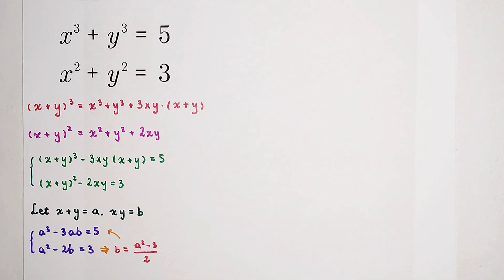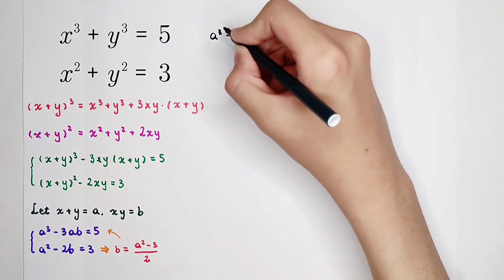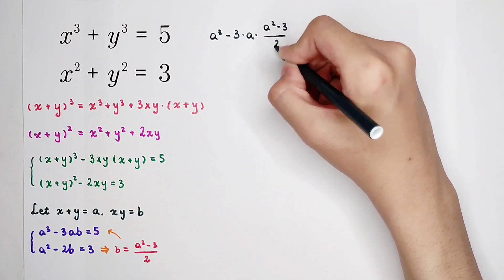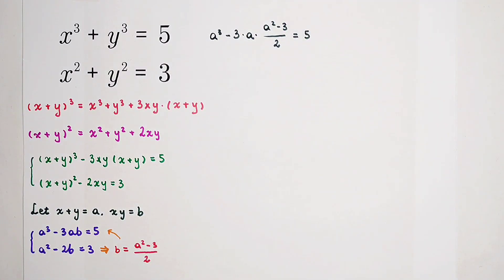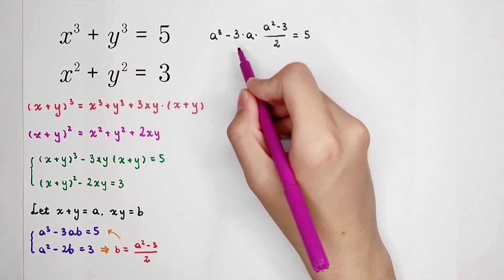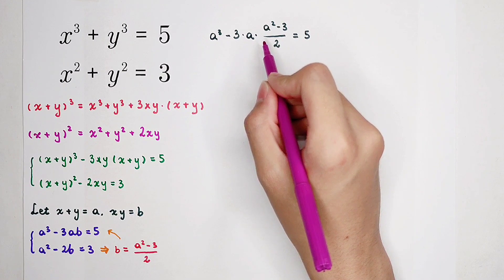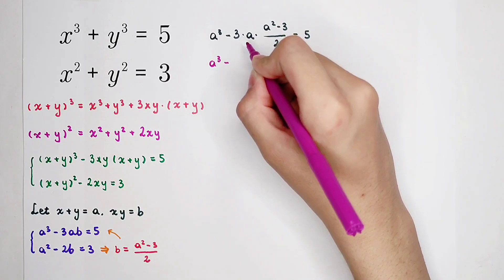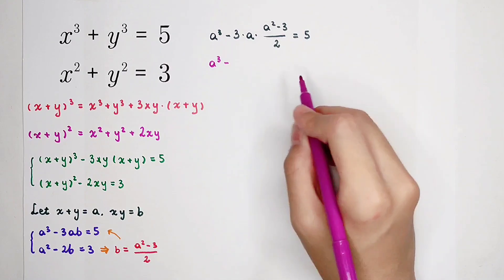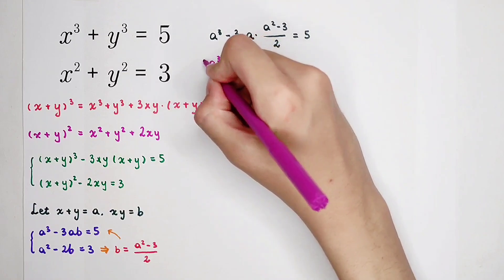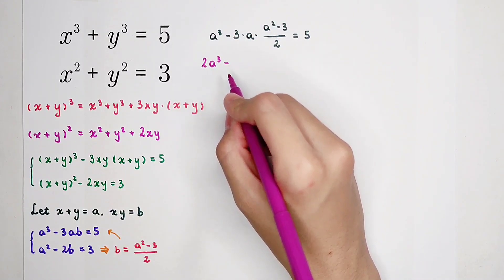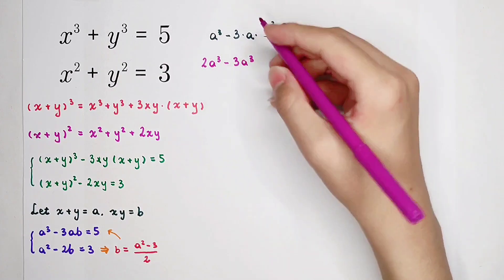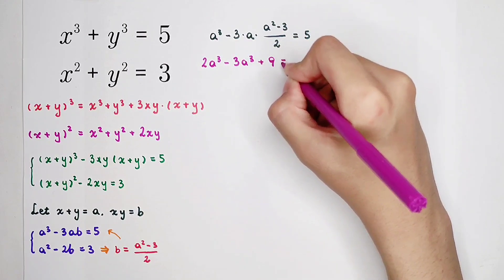We get this cubic equation: a cubed minus 3 times a times b, where b equals a squared minus 3 over 2, equals 5. To simplify, multiply both sides by 2: we get 2a cubed minus 3a cubed plus 9a equals 10. Wait — let me be careful here.